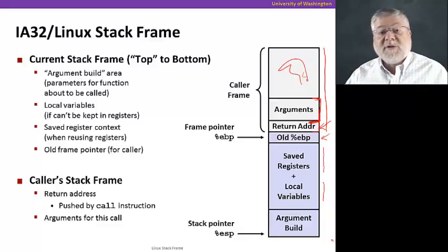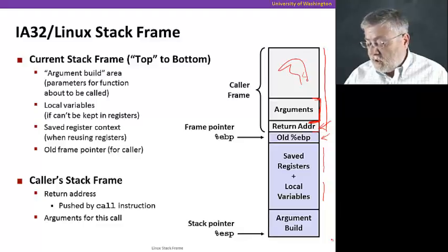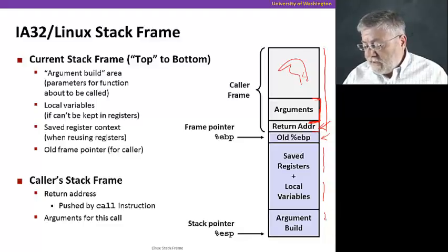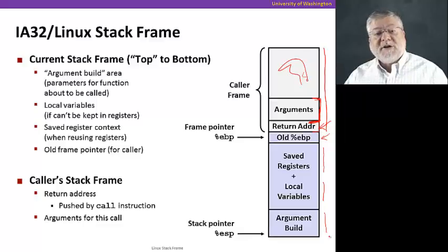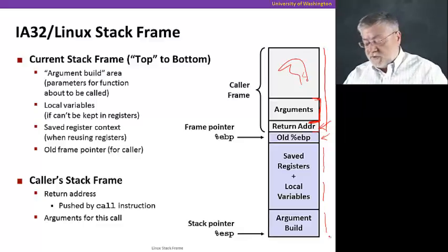And then of course some local variables as well that we might want to use in the callee procedure. And we'll get ready building up arguments for any other functions that we want to call from this procedure.